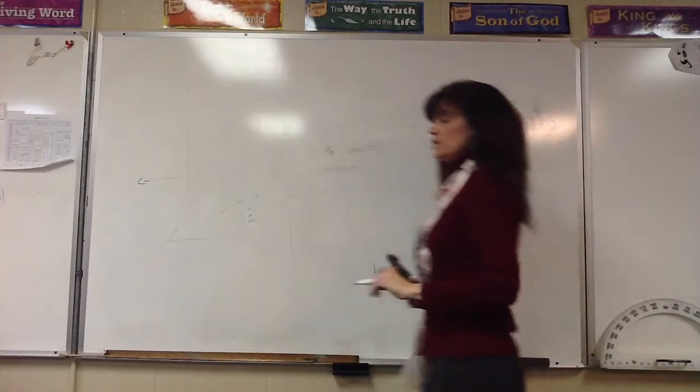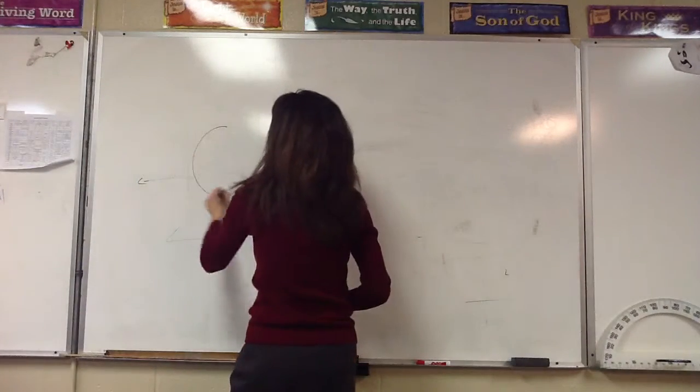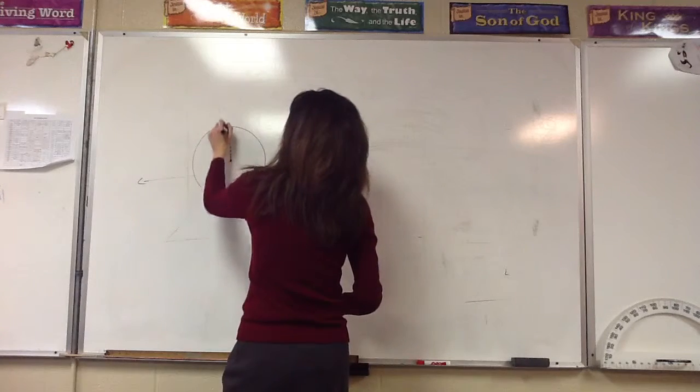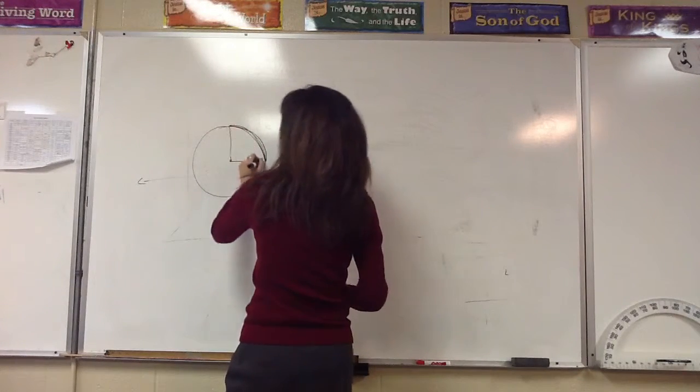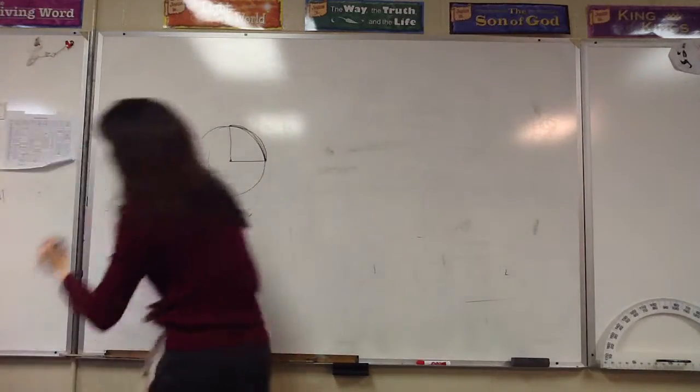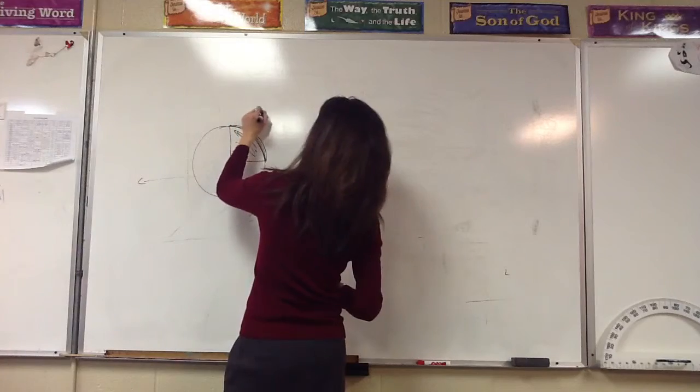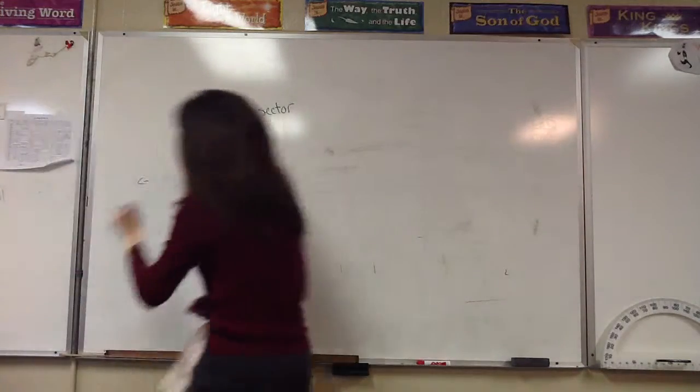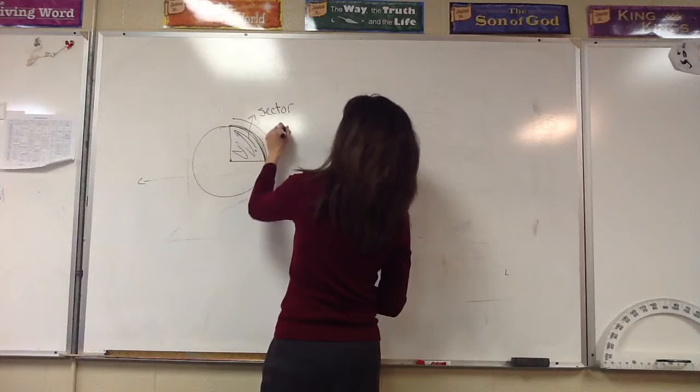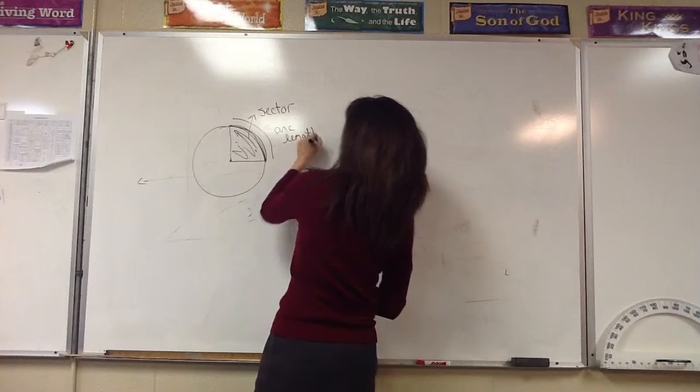Okay, so here in our sector of circle, let's talk about actually what it is. We have a circle here, and we have two radii. This is our arc here. Everything that's highlighted on the inside here would be called our sector of our circle. And then, this right here, from here to here, would be my arc length.